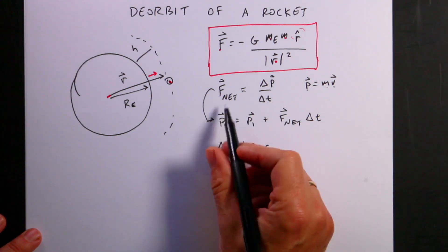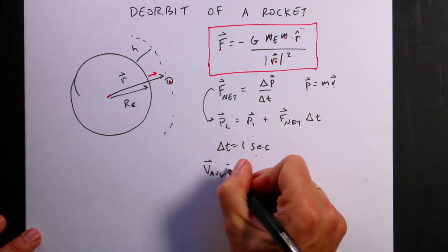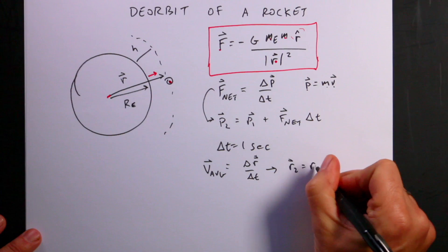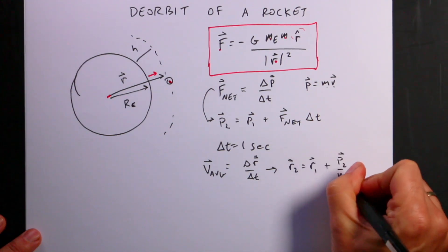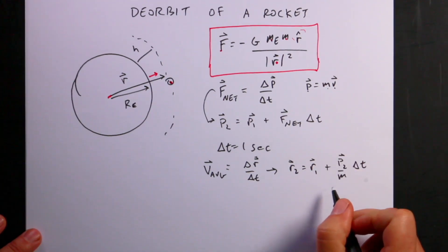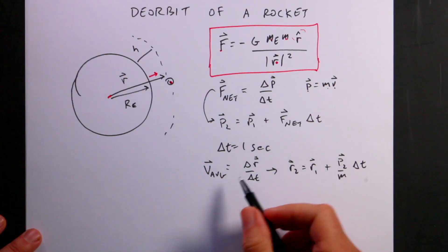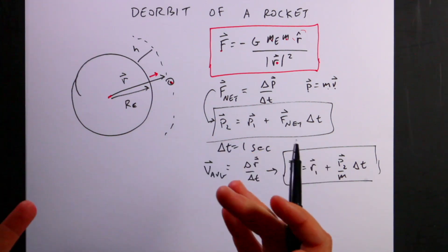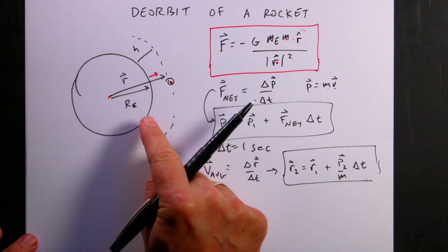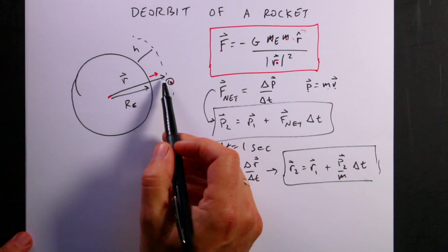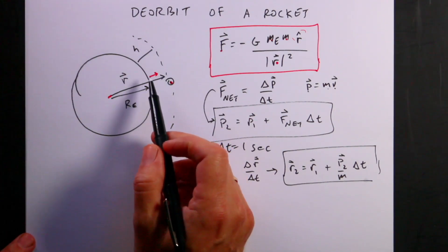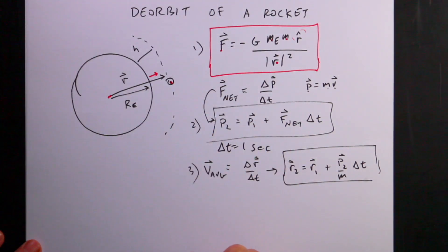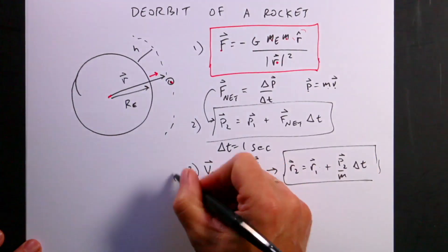Using the definition of average velocity — change in position over change in time — R2 equals R1 plus P2 over M times delta T. Since the force changes direction, I break it into small time steps. The order of operations is: one, calculate the force; two, update the momentum; three, update the position. Then with a new position I have a new force, so I start all over.